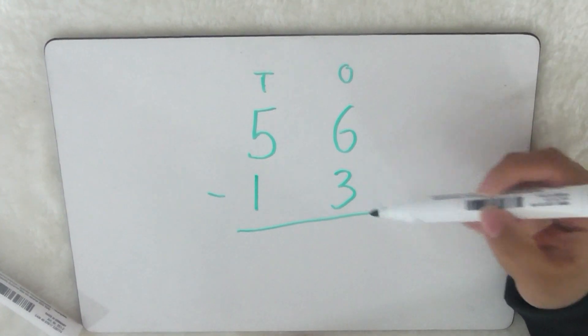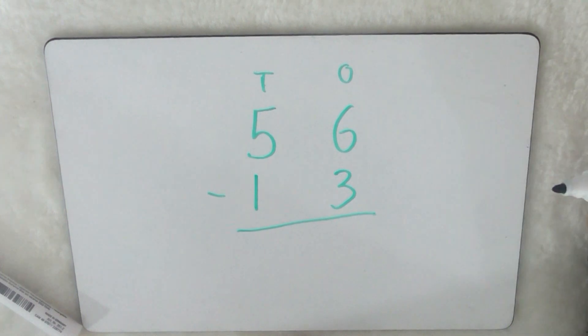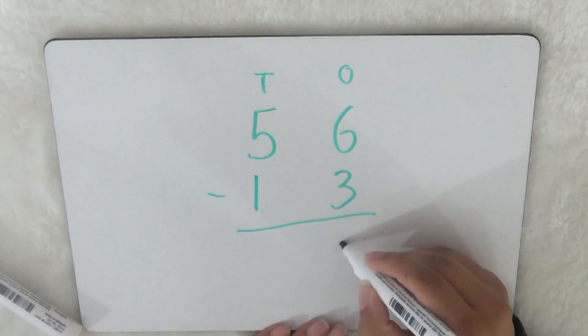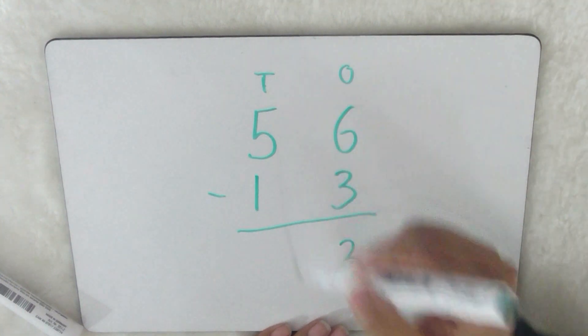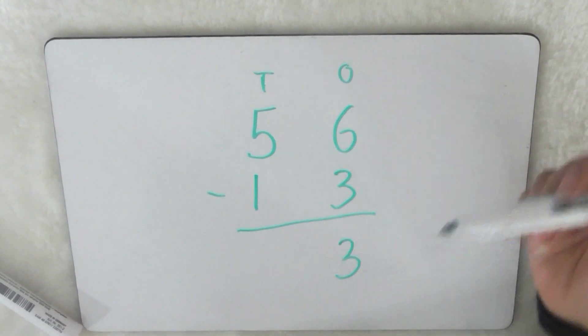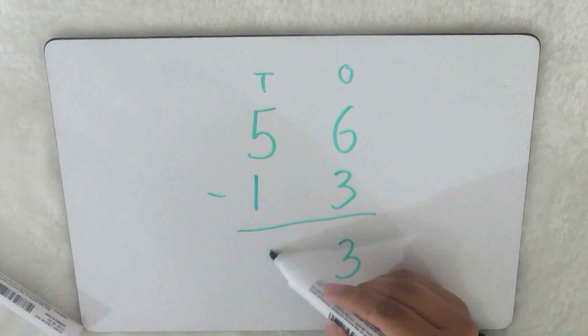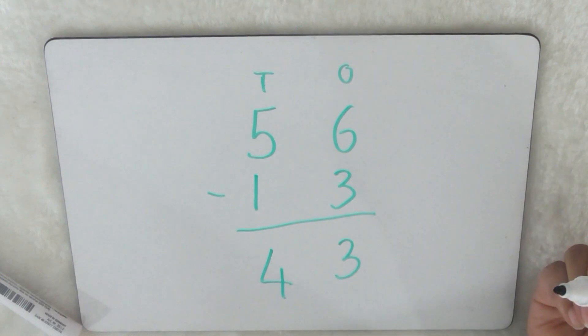So again we start off with the ones column, so what's six take away three? And that's three, so I have the three. And then we do the ten side, so what's five take away one? That's four, so the answer is 43.